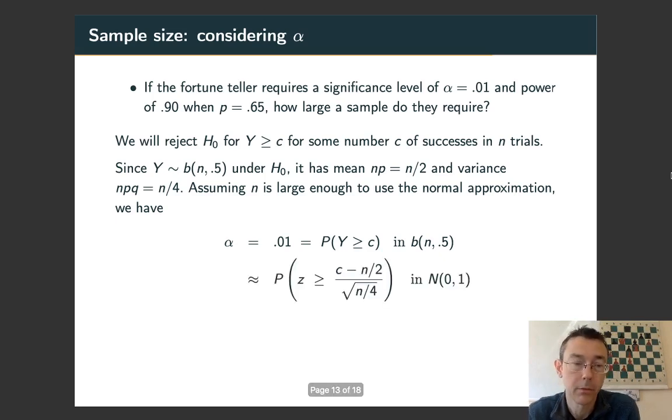Let's write that using a normal approximation. 0.01 is the probability of randomly getting a z value greater than or equal to the z value of Y = c. So α = 0.01, probability of z ≥ something, means we have 0.01 area to the right of that z value, so 0.99 area to the left. I'm doing the inverse normal CDF of 0.99. That's where that 2.326 is coming from. So here I have a relation between c and n.